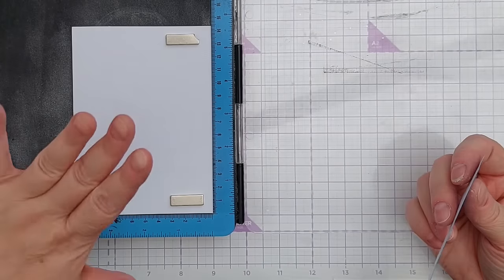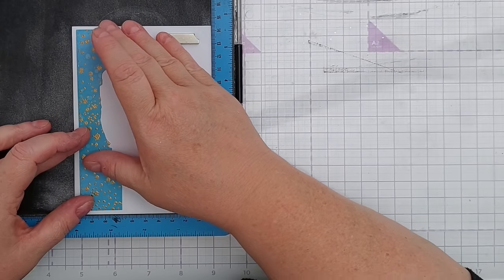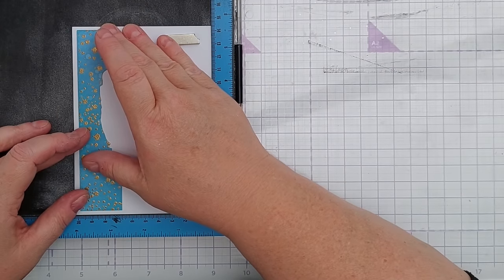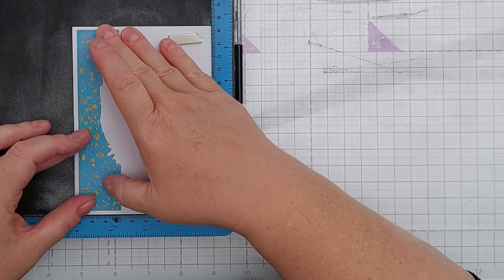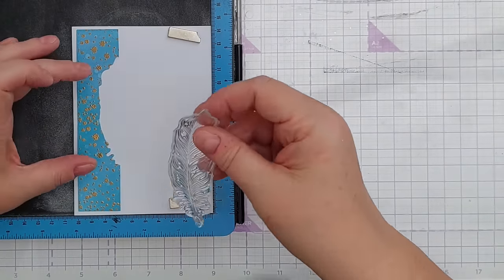So put my card blank in my stamping platform, and I'm just going to pop this bit here that I've cut out, get it where it's going to be on the final card, and now take my feather stamp.